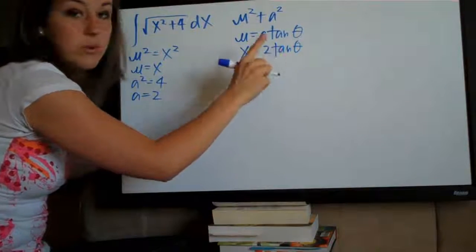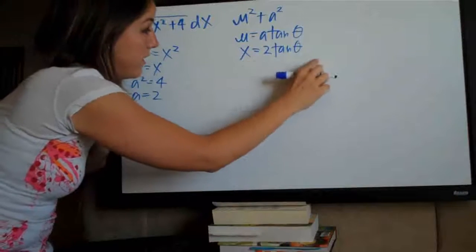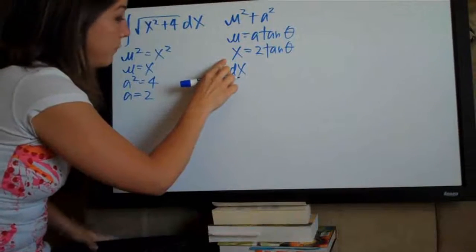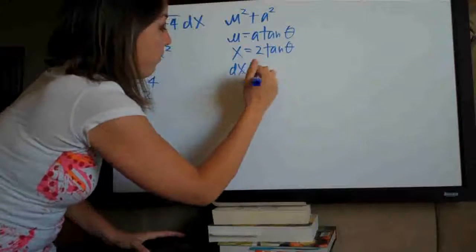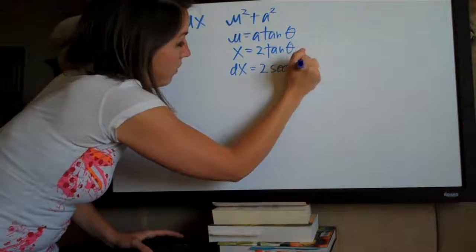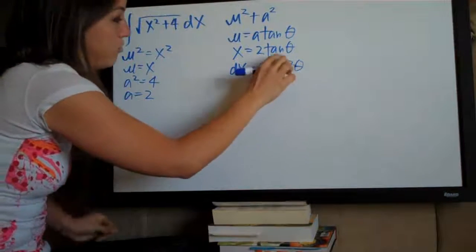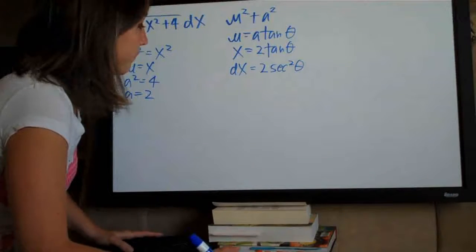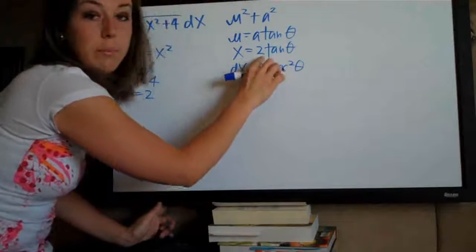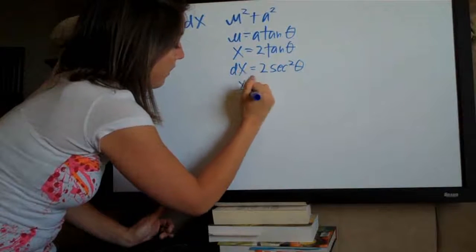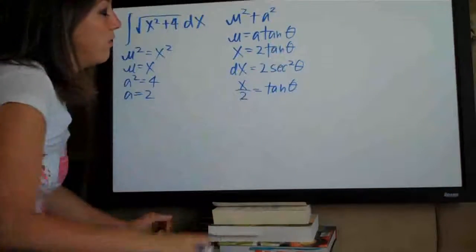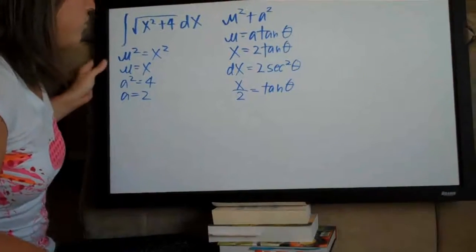Now that we've done this, we need to do a couple of things. We'll need the derivative of x, which is dx. When we take the derivative, we get 2 secant squared theta d theta — secant squared is the derivative of tangent. We're also going to need to solve for tangent of theta. We divide both sides by 2 and get x over 2 equals tangent of theta. We're going to need all of these for our substitution.